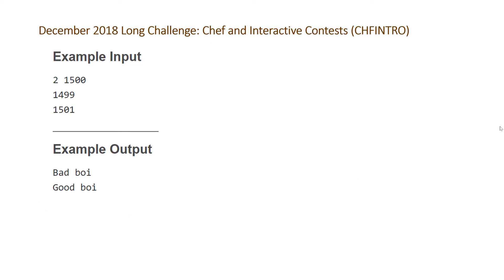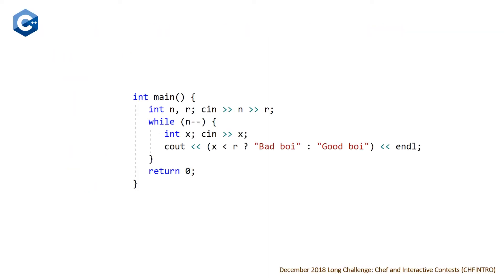Starting with our C++ solution, we're reading in n and r, then looping through each of the n contestants reading in x. We use a ternary operator: if x is less than r output "bad boy", else output "good boy", and then endl — baked into this endl is a system flush, so it's going to flush the system automatically.